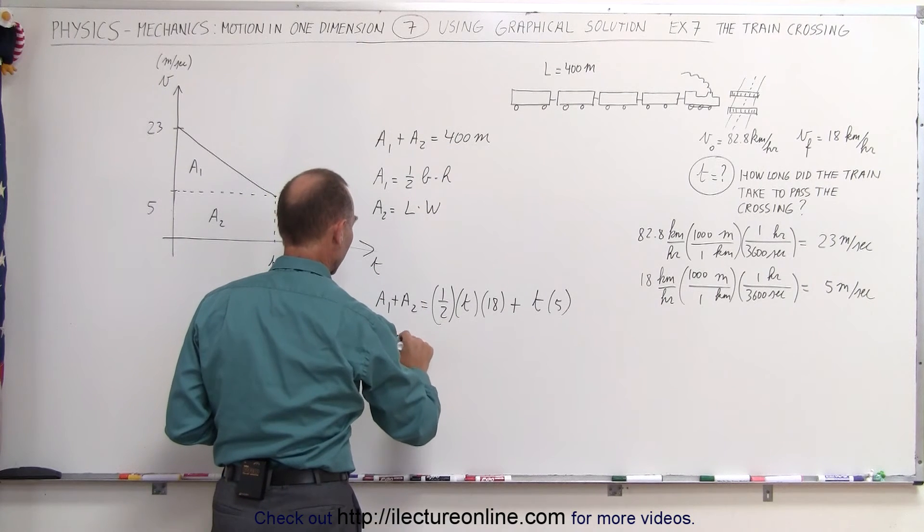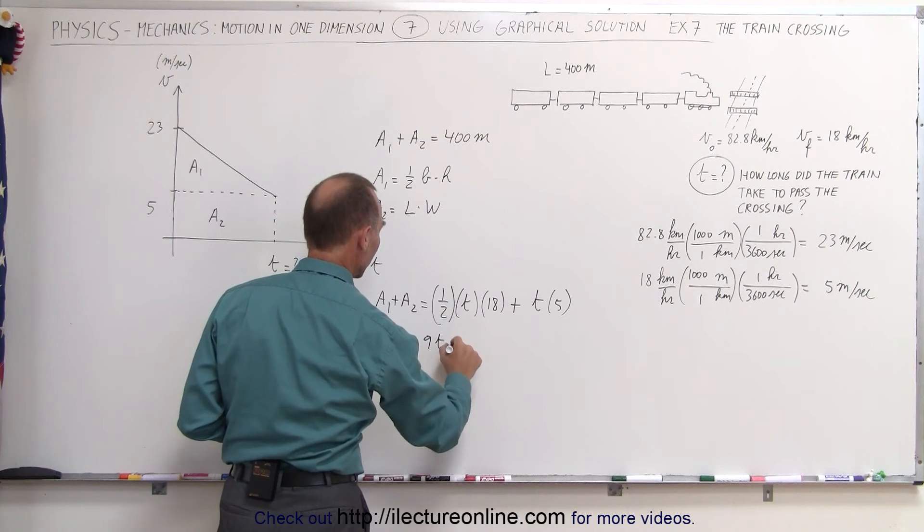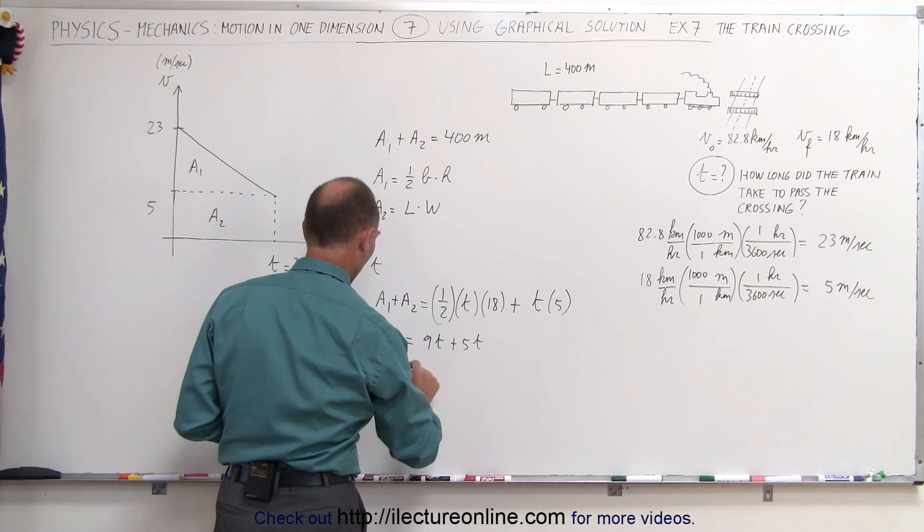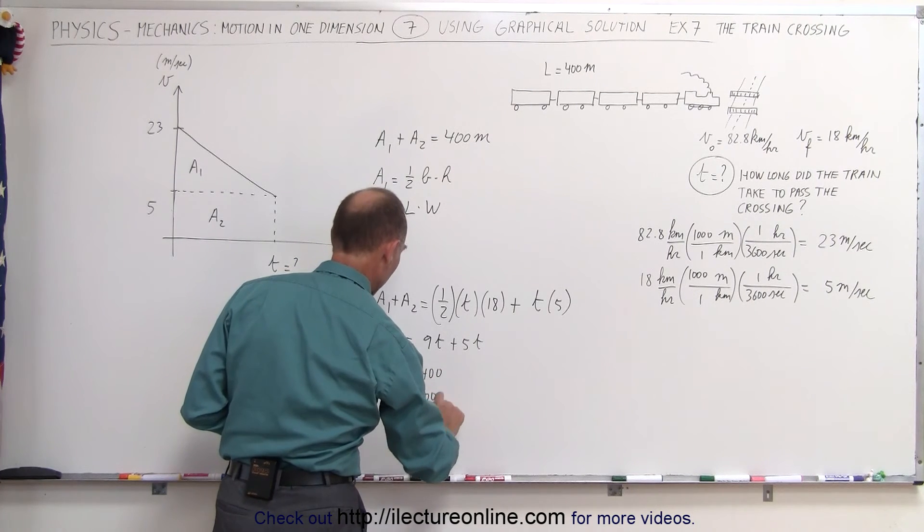And A1 plus A2 we know is 400 meters, so we can say that 400 is equal to one half of 18 would be 9, so 9t plus 5t, or 14t is equal to 400.